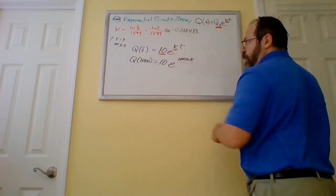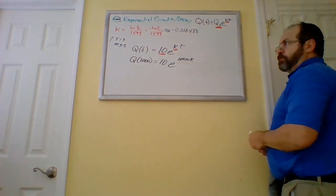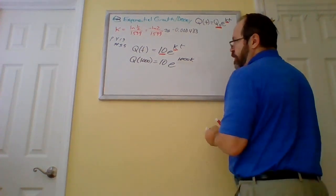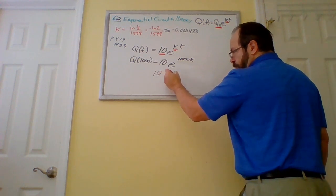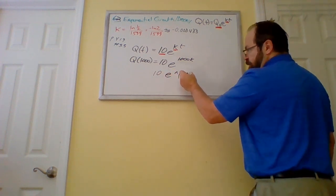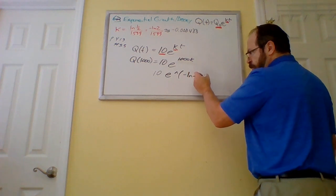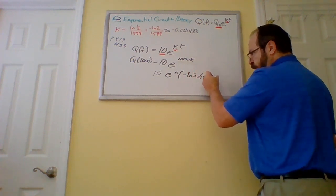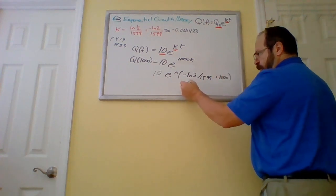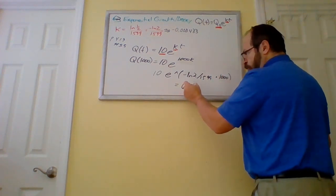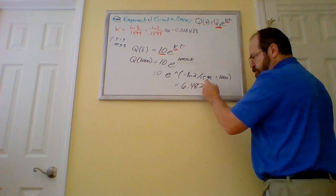I just typed in this expression on Wolfram Alpha, or you can do it on your calculator. Raise this to the negative natural log of 2 divided by 1599 times a thousand, and we get six point four eight two grams.